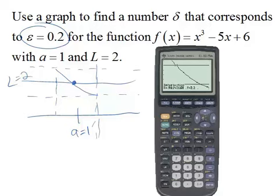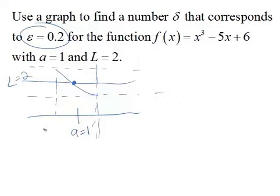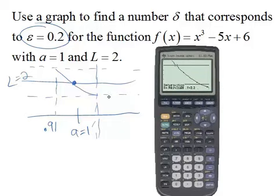It's going to compute that, so it says when the y is 2.2, that intersection is 0.9114. So we'll round that to two decimal places, so 0.91. Now we're going to do the same thing to find our value over here on the right side of one.